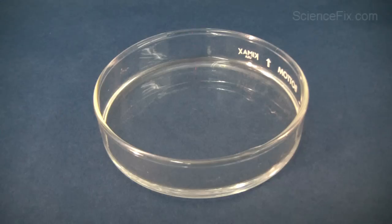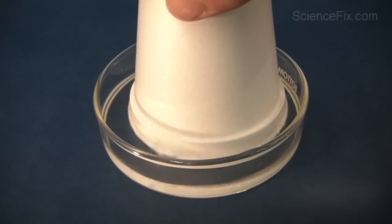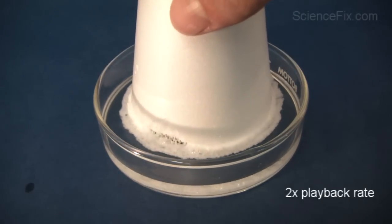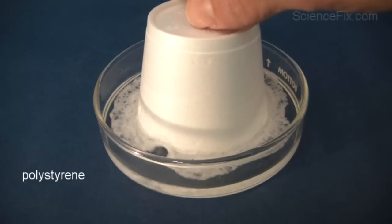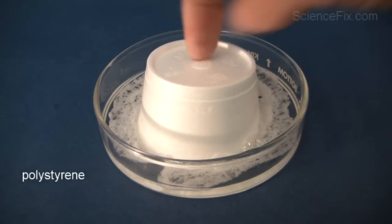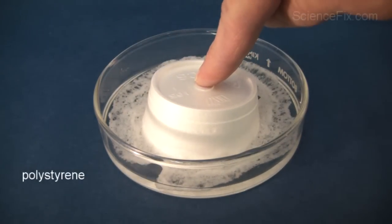The big question we have here is why does the styrofoam cup do that? Styrofoam is actually a chemical called polystyrene, and polystyrene is a polymer. A polymer is a chemical made up of repeated units of smaller chemicals called monomers.